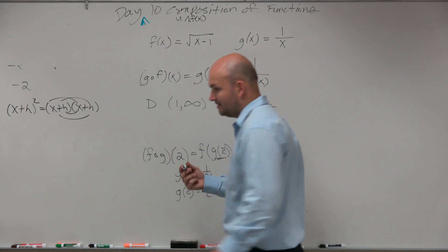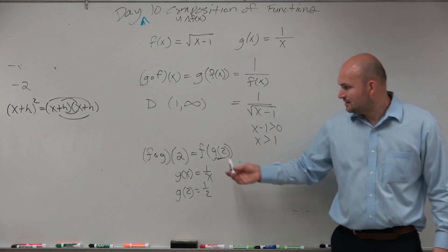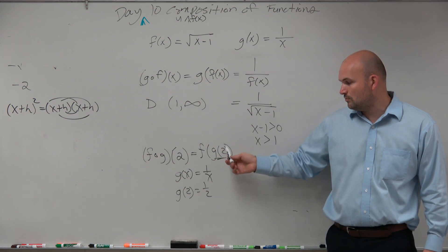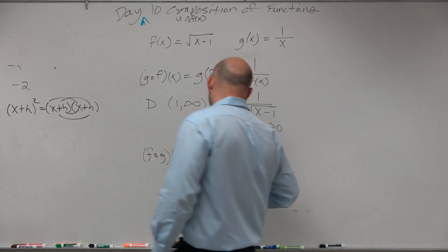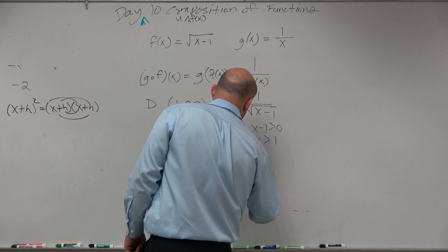So now, here's where we've got to finish this. This is saying f of g of 2. Well, what is g of 2 really equal to? 1 half. So now I can just evaluate this for f of 1 half.